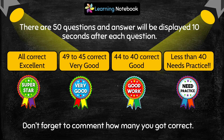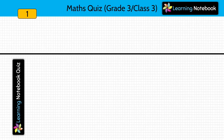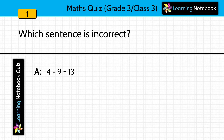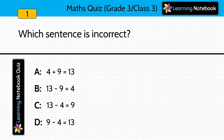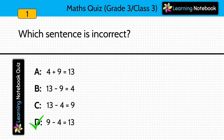Question 1: Which sentence is incorrect out of these four options? Answer is option D, because it says 9 minus 4 equals to 13. This is wrong — 9 minus 4 equals to 5.